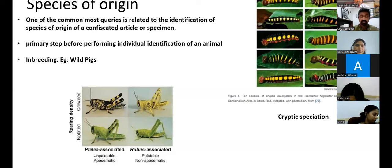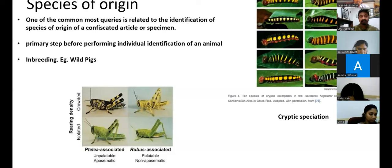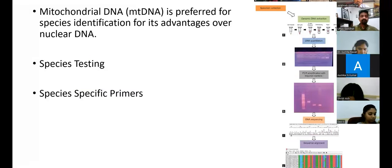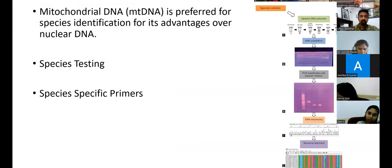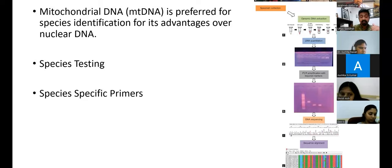This is about species of origin — when a certain article is identified and it needs to be answered which particular species it belongs to. This is when DNA forensics comes into picture. In wildlife DNA forensics, mitochondrial DNA is the most preferred type because of its advantages over nuclear DNA. Nuclear DNA also has its applications, but when it comes to identification of species of origin, mitochondrial DNA is very important. Why? Because mitochondrial DNA is very robust.